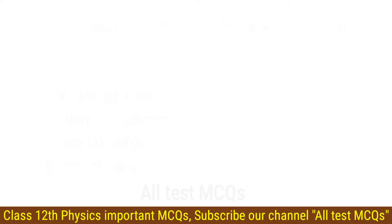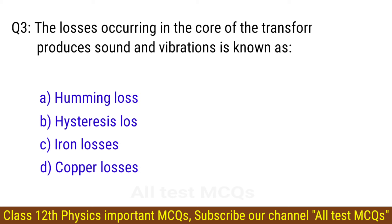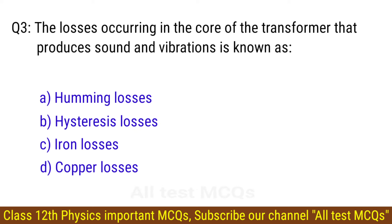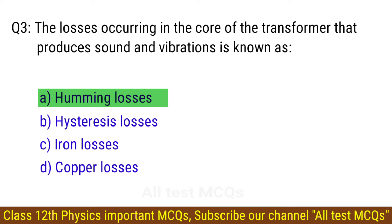Question number 3. The lodges occurring in the core of the transformer that produces sound and vibration is known as? The right answer is option A: Humming lodges.